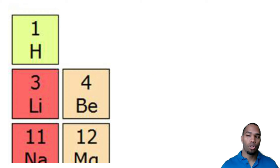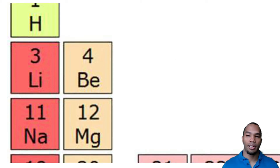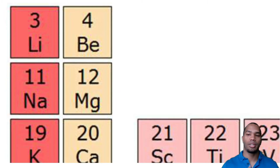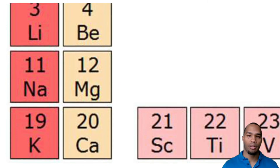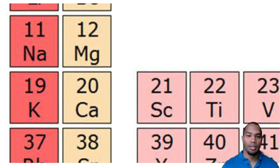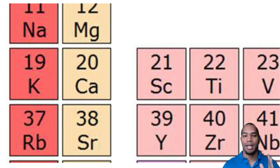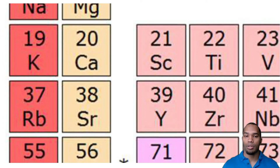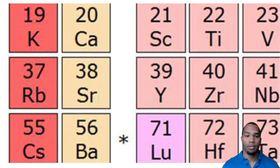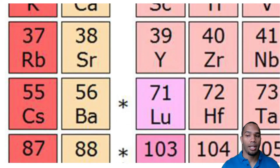So when you look at chemical formulas, you need to first recognize that if you see a single capital letter, you're dealing with one element. If you see a capital letter followed by a lowercase letter, you're also dealing with one element.